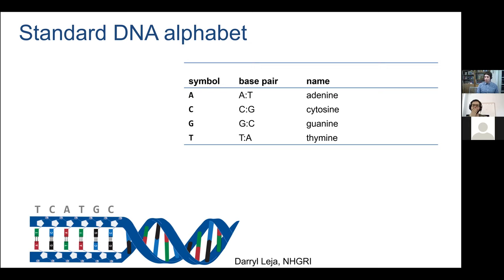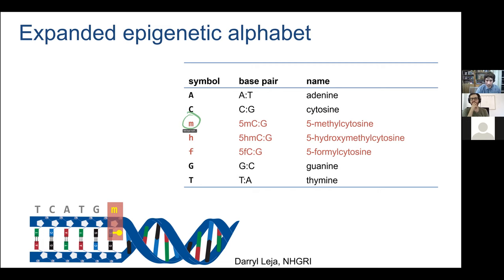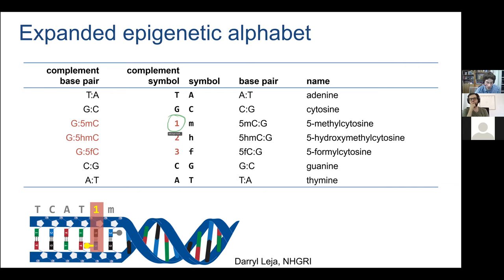We tried the simplest possible approach — expanding the DNA alphabet from ACGT to include M (methylated cytosine), H (hydroxymethyl cytosine), and so on. Since modifying cytosines breaks the strand symmetry, we need additional symbols: 1 for guanine base-paired to a methylated cytosine, 2 for guanine paired to hydroxymethyl cytosine, etc. We also added ambiguity codes like X (M, H, or anything) and Z (any kind of cytosine or modified cytosine).